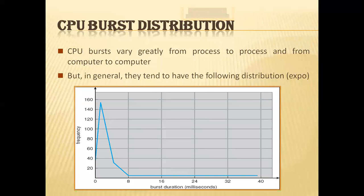From this particular graph, we can understand that some bursts are long bursts and some are short bursts. This graph is a hyper-exponential graph and the CPU burst duration basically varies from process to process and from computer to computer.